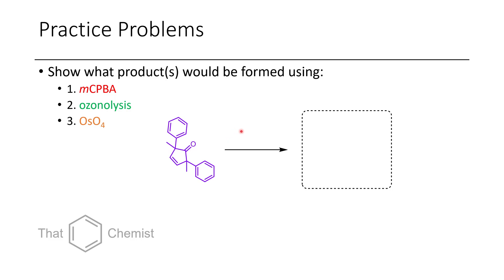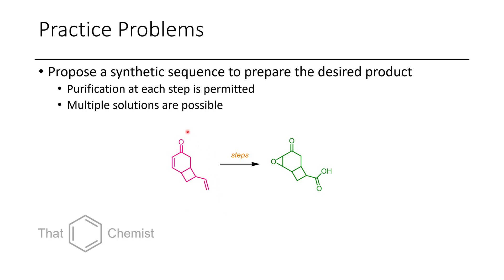For this lecture, I'd like to assign two practice problems. In the first, show what would occur if you treated this reagent with MCPBA, then the same starting material with ozonolysis, and finally with osmium tetroxide. The second problem takes this alpha-beta unsaturated ketone with an alkene on it — propose a series of steps that would afford this carboxylic acid-containing epoxide. There isn't just one solution; this is our first real practice problem of a multi-step synthesis. It's important to learn how to propose a series of reactions to get from one complex molecule to another, and multi-step synthesis is frequently on final exams and midterms.